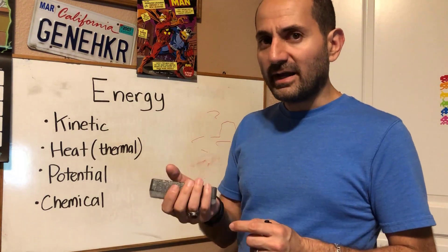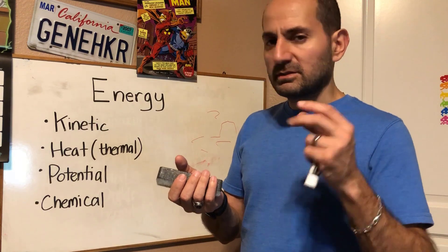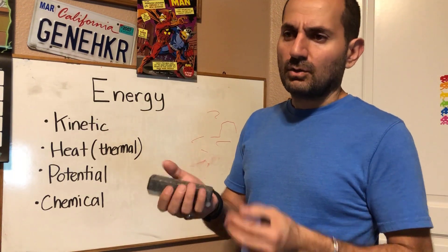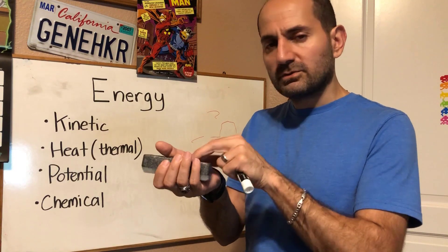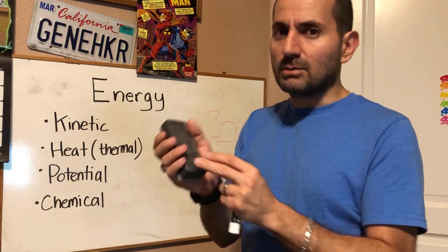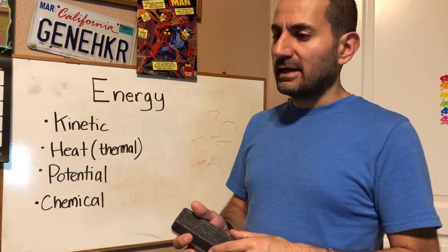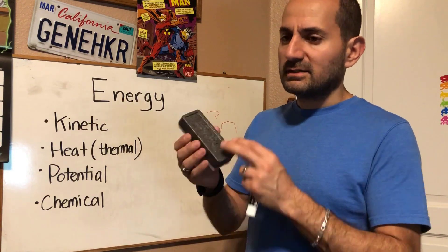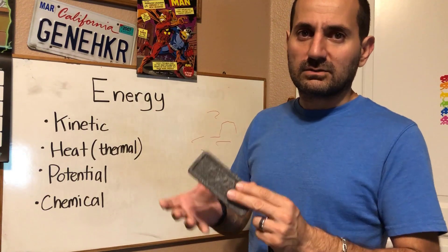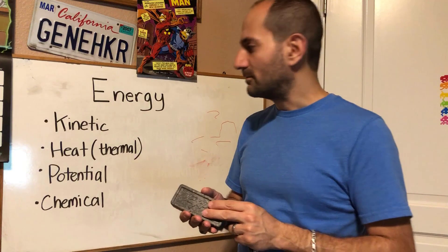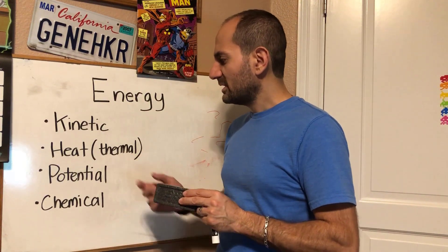When something is hot, the molecules inside it are moving around quickly. When something is cool, those molecules inside it are moving around more slowly, and when something is cold, those things are moving around quite slowly. They're barely moving at all. That's what heat is.